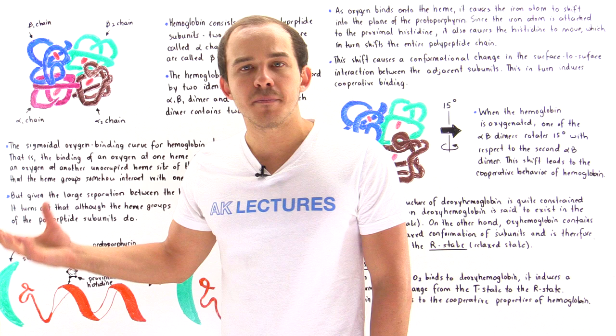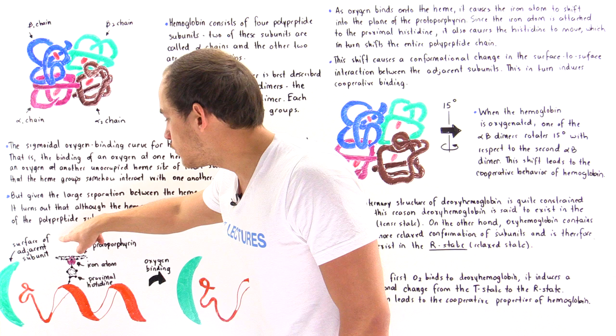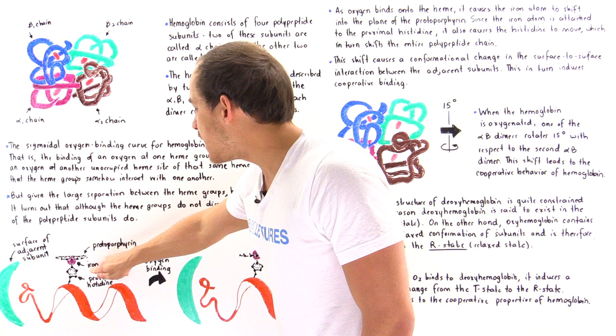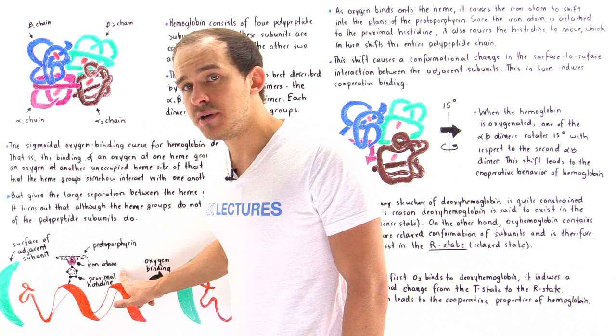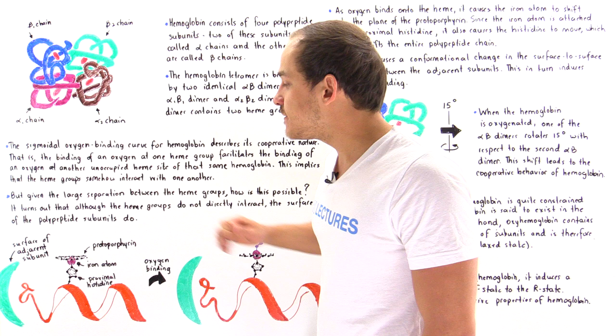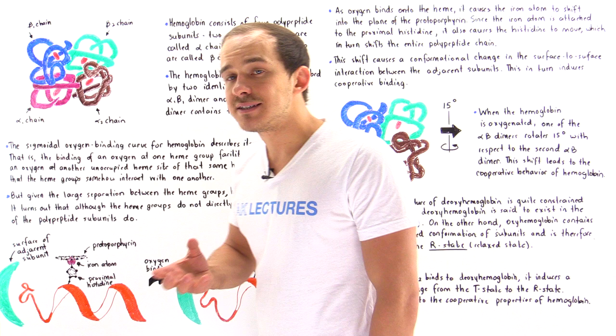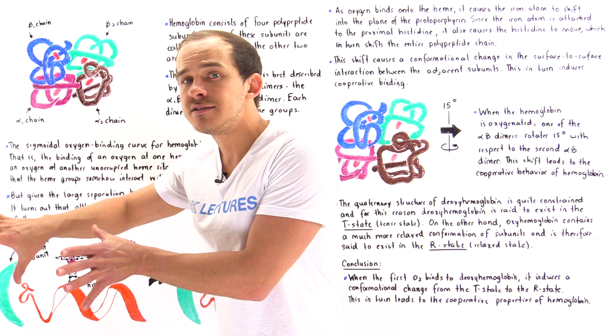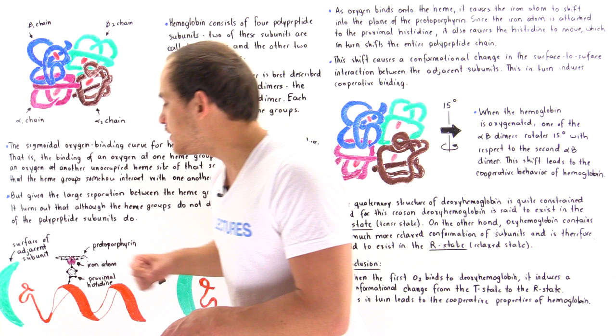In this diagram, we have the alpha helix of one of the polypeptide chains, which is attached to the heme group. The heme group consists of the organic component — the protoporphyrin — and the inorganic iron atom. The iron atom is attached to the proximal histidine amino acid that is attached to this polypeptide chain. Notice that because oxygen is not attached to the iron atom, the iron is found below the plane of the protoporphyrin — when unbound, the iron is simply too large and contains high electron density. The green structure represents the surface of the adjacent polypeptide subunit.